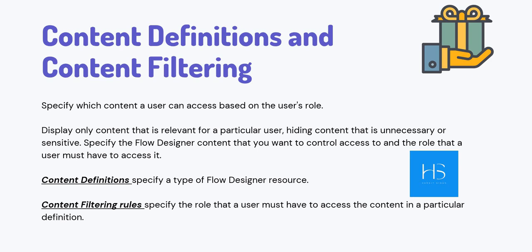Finally, my favorite feature: Content Definitions and Content Filtering. With this functionality you can restrict people from looking at the content of your flows — displaying only content relevant to a particular user and hiding content that is unnecessary or sensitive. You can specify the Flow Designer content you want to control and the role a user must have to see it. Content Definition is the first step, where you specify the type of Flow Designer resource you want to restrict.